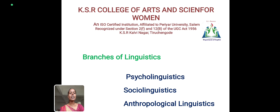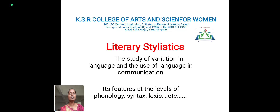There are three branches in linguistics: sociolinguistics, psycholinguistics, and anthropological linguistics. Literary stylistics is the study of variation in language and the uses of language for communication.